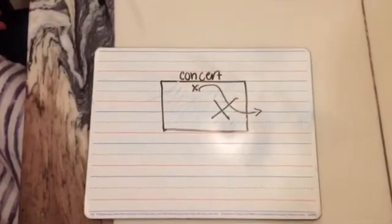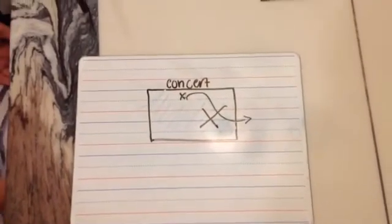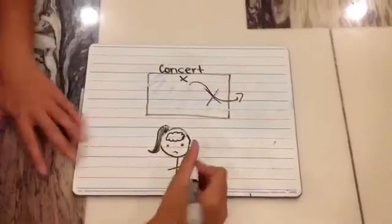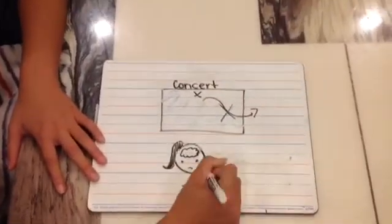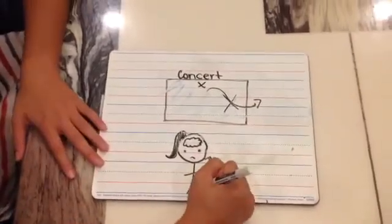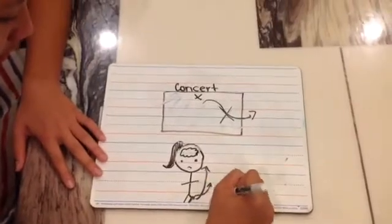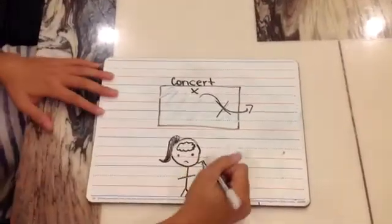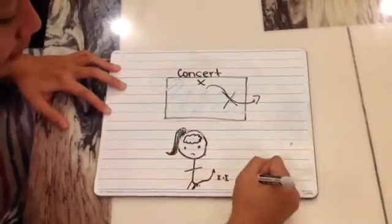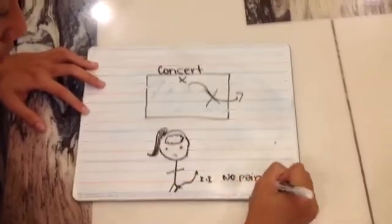Let's say that you fall on the ground and hurt your knees. Then when you rub it, you feel better. Why? Here's why. First, the damaged area sends a signal to your brain. But by rubbing it, a gentle touch activates the inhibitory neuron, which then blocks the projection neuron from sending signals to your brain. Because the projection neuron is blocked, no signal is sent to the brain, which means there is no pain.